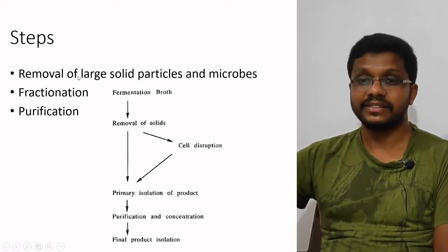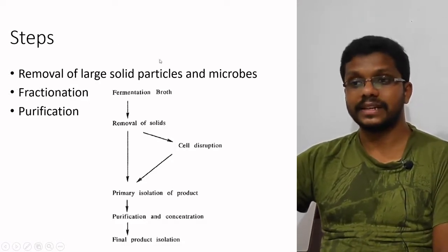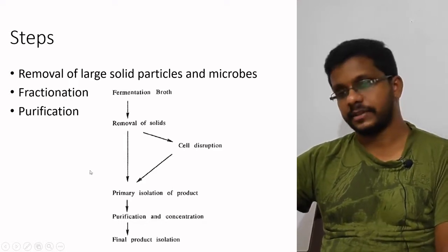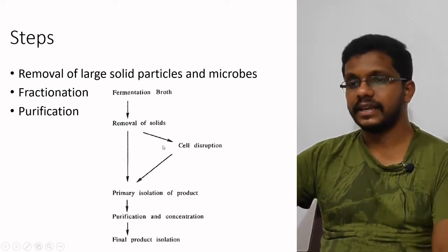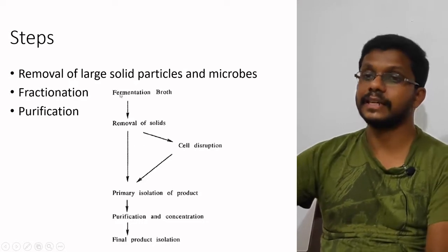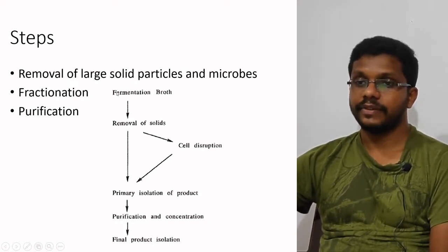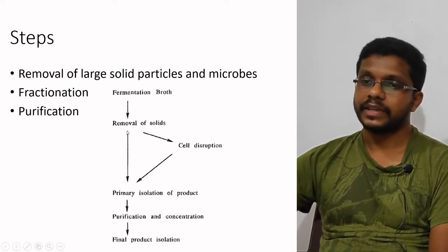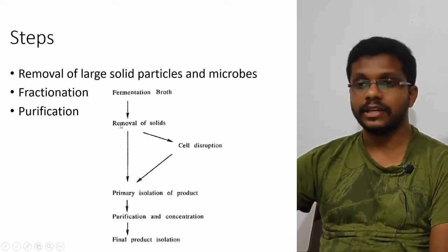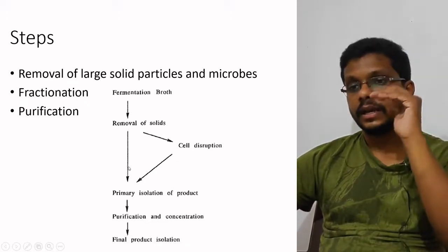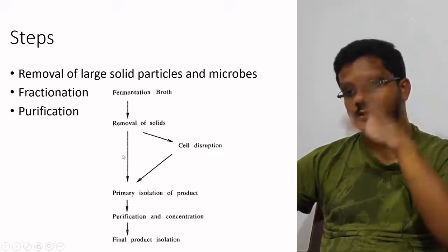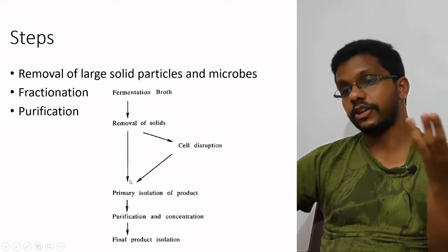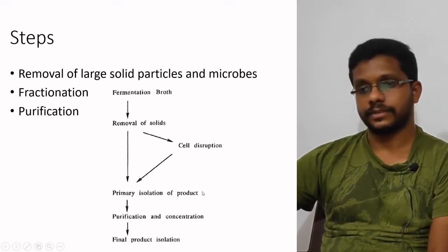In most fermentation processes, the first step is separation of solid particles from the media, then fractionation and purification. After fermentation, we get the fermentation broth. In the removal-of-solids step, if our product is extracellular, we remove the microorganisms and other solids, then take the supernatant — the liquid portion — and proceed to isolation.